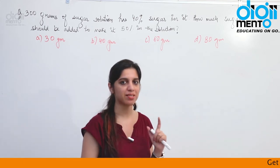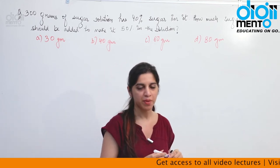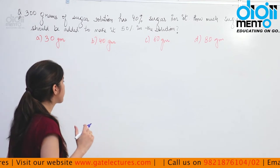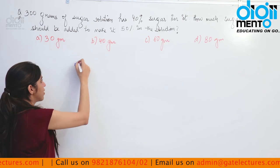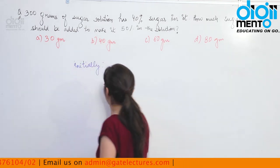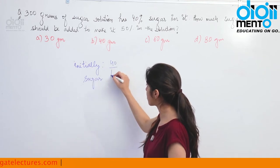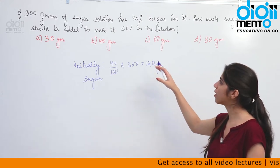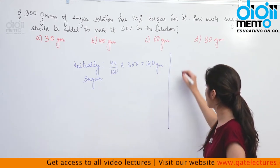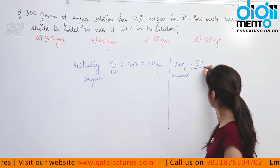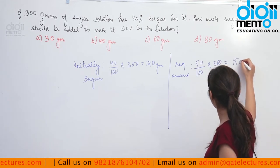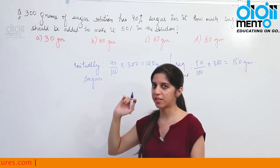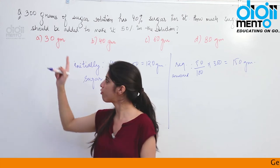First I will tell you what mistakes students generally commit in this kind of question, then we will see the right approach. Sometimes, in a hurry or due to some distraction, students will say: initially the solution had 40% sugar, so the initial amount of sugar is 40% of 300 grams, which is 120 grams. Now they want to make it 50%, so they find 50% of 300, which is 150 grams. Then they just compare these two values — initially sugar was 120 grams, required is 150, so we need to add 30 grams.